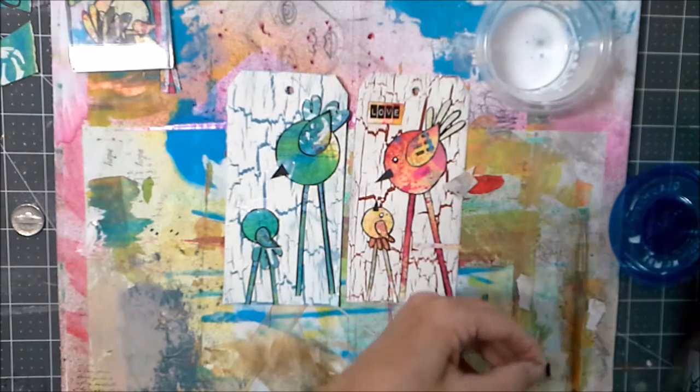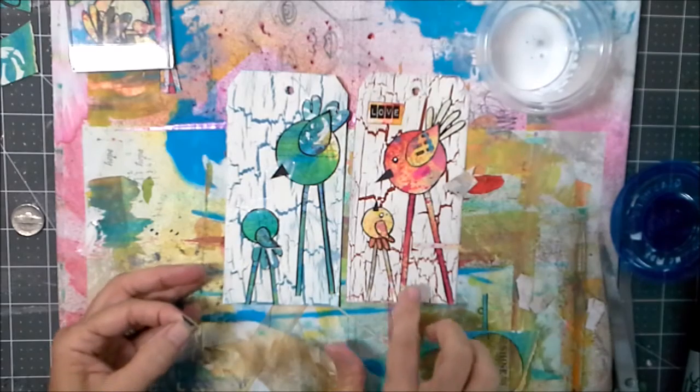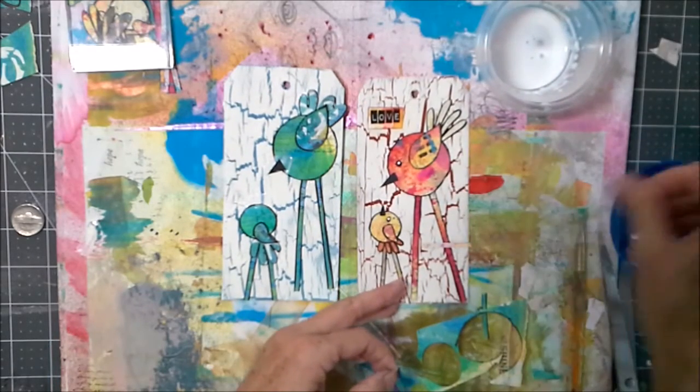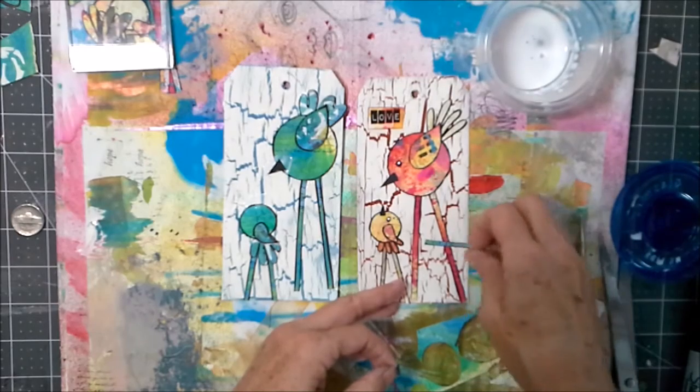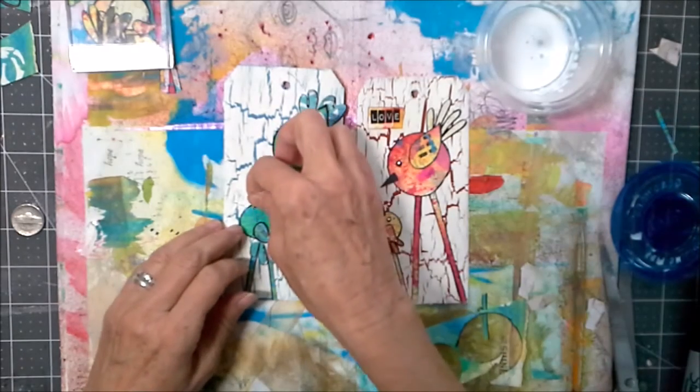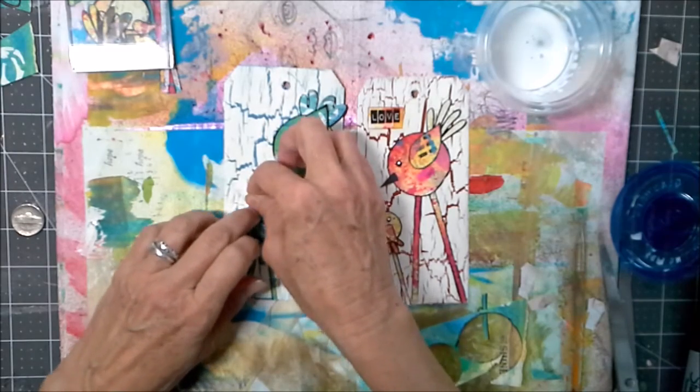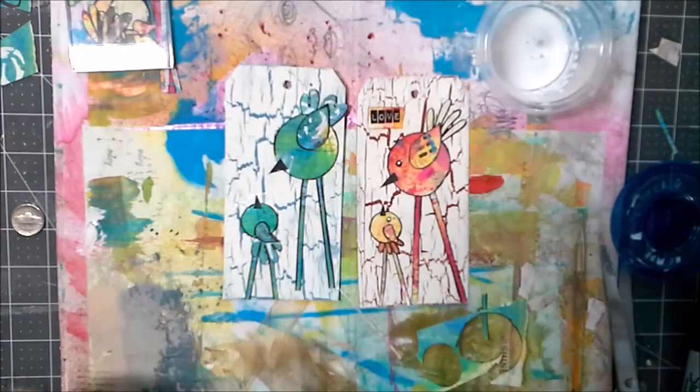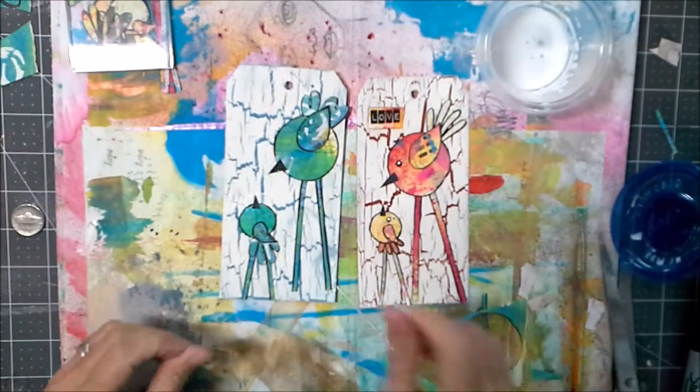Okay. I also think that this crackle background this cat hand crackle background would be so cool as a background for her torn paper flowers. I think that would look really sweet too. So I might try one of those. I do have another this background that I dried outside. Okie dokie. There we go.